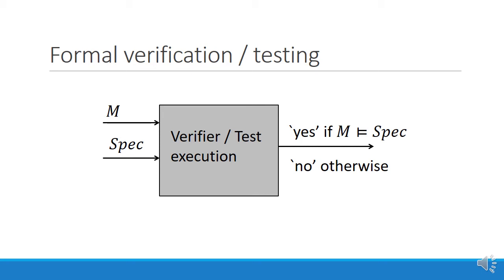So in both testing and formal verification, we first create a model or a program and then check whether it satisfies the specification or similarly passes the tests. In other words, we describe the what, we describe the how, and we put them one against the other.